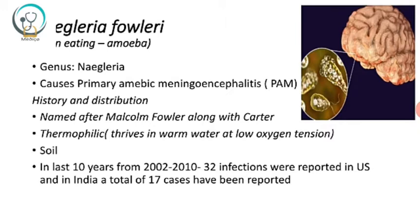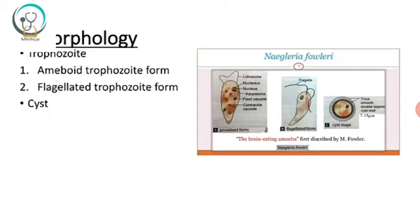Naegleria fowleri causes primary amoebic meningoencephalitis (PAM). Regarding its history and distribution, it was named after Malcolm Fowler along with Carter. It is thermophilic — a heat-loving organism that thrives in warm water at low oxygen tension and is also seen in soil. In the last 10 years, from 2002 to 2010, about 32 infections were reported in the US, and in India a total of 17 cases have been reported.